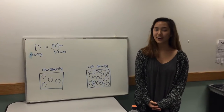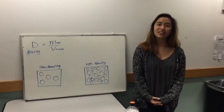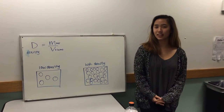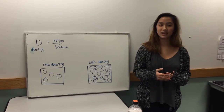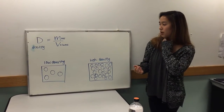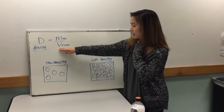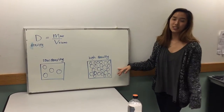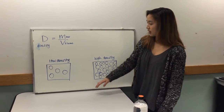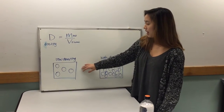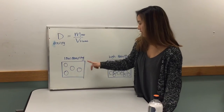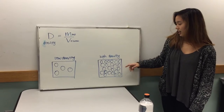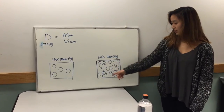Next, you'll give the kids some background information on density. You can start off by asking them what they think density is. The answer you're looking for is that it's the amount of mass in a given volume. On the board, you can write out the equation for density as well as diagrams that give a better visual representation. An object with low density has a smaller amount of particles per a given volume, while an item with higher density has a higher amount of particles within the same given volume.